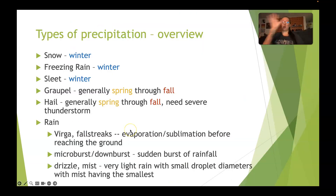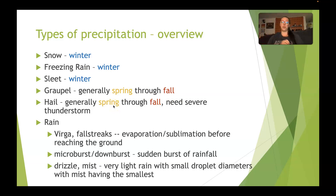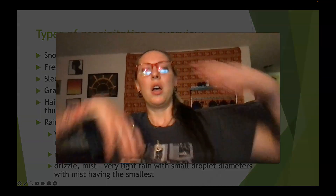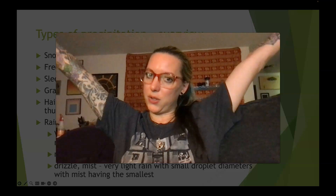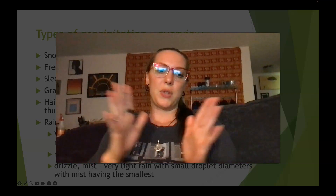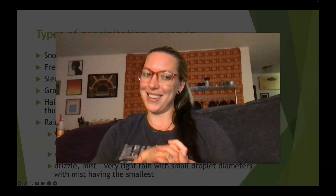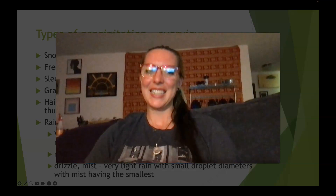Lastly, here's a general overview slide showing the different types of precipitation we've covered and the general season in which they can occur. That finishes up precipitation types, which also finishes up unit two. Please continue on to the next several videos for the next topics in our next unit on circulation. Thank you so much for watching — see you soon.